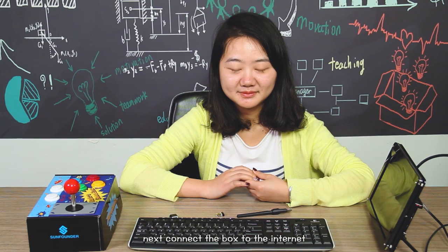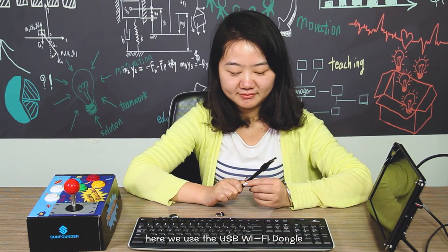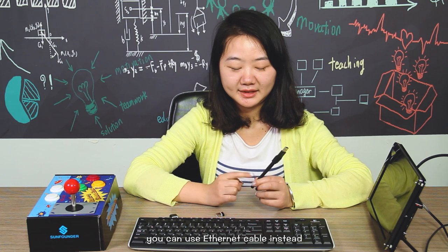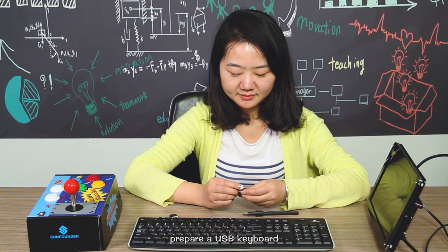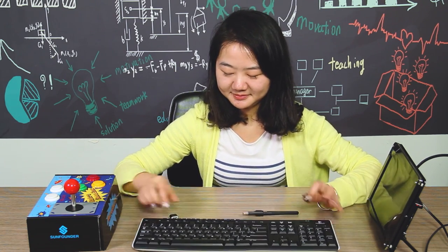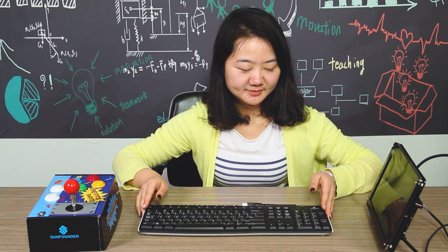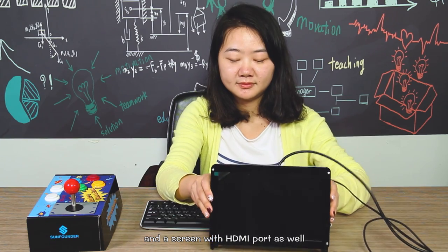Next, connect the box to the internet. Here we use the USB WiFi dongle. You can use Ethernet cable instead. Prepare a USB keyboard. Here we use the USB wireless keyboard and a screen with HDMI port as well.